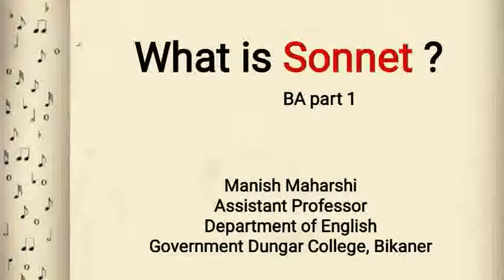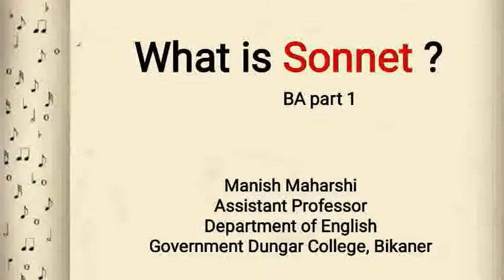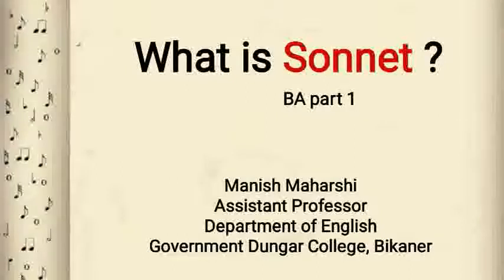Surrey wrote his sonnet in three quatrains in alternate rhyme followed by a concluding couplet. The rhyme scheme is ABAB CDCD EFEF GG — a form so splendidly used by Shakespeare later that it is now called after him, not after Surrey, its real originator. Since it is divided into four parts, it has no pause or turn of thought.